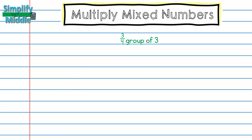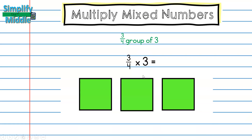Let's do one more example with multiplying a fraction times a whole number, and then we're going to move into mixed numbers. Three-fourths of a group of three is the same as three-fourths times three. I always draw my second factor, so I have three here, and I'm going to be cutting that into four pieces because that's the denominator for my first factor.